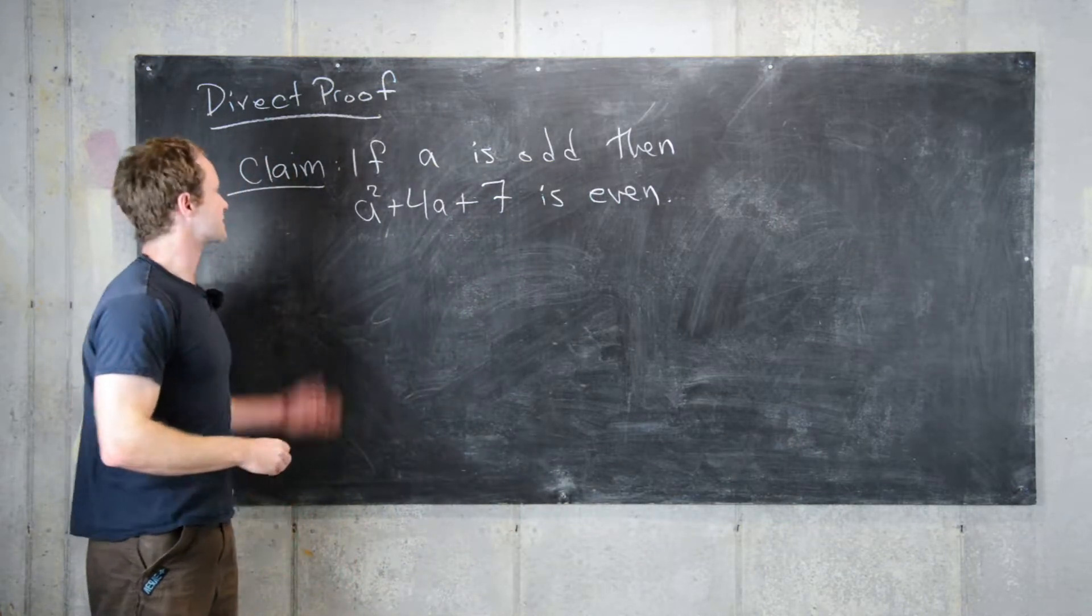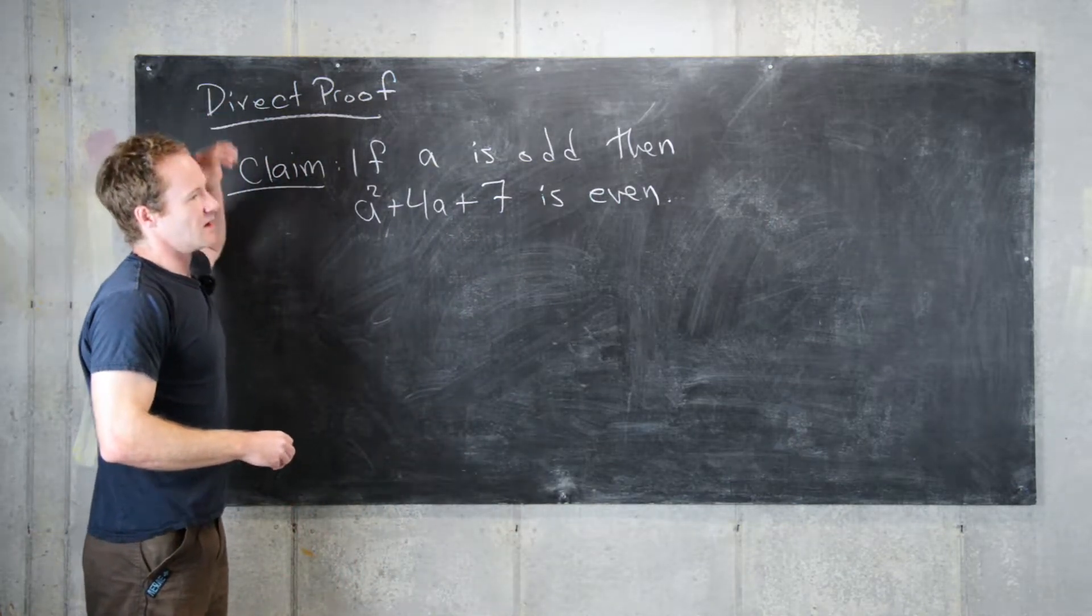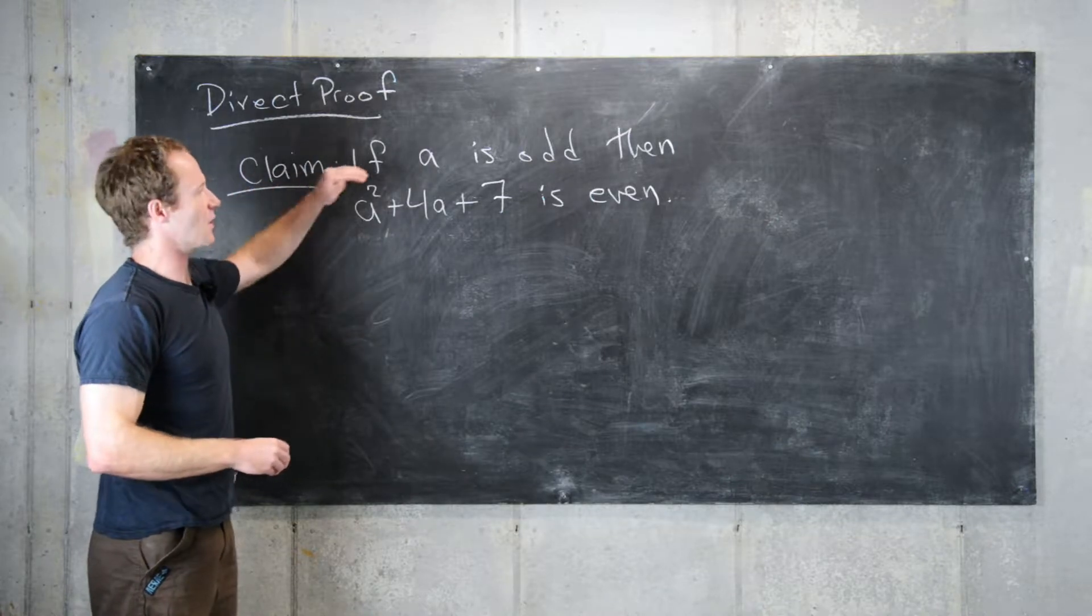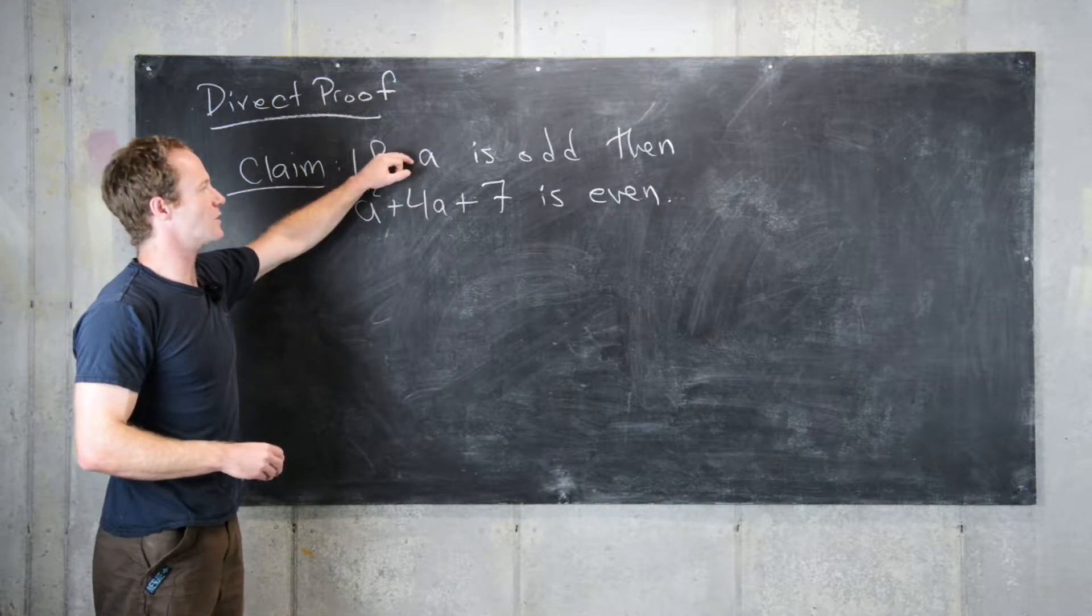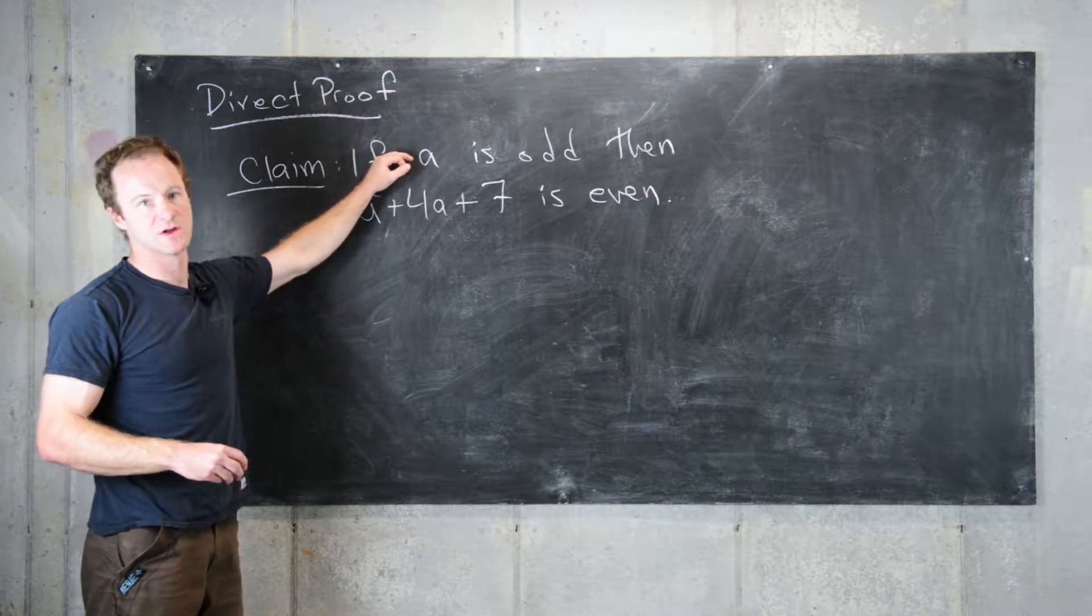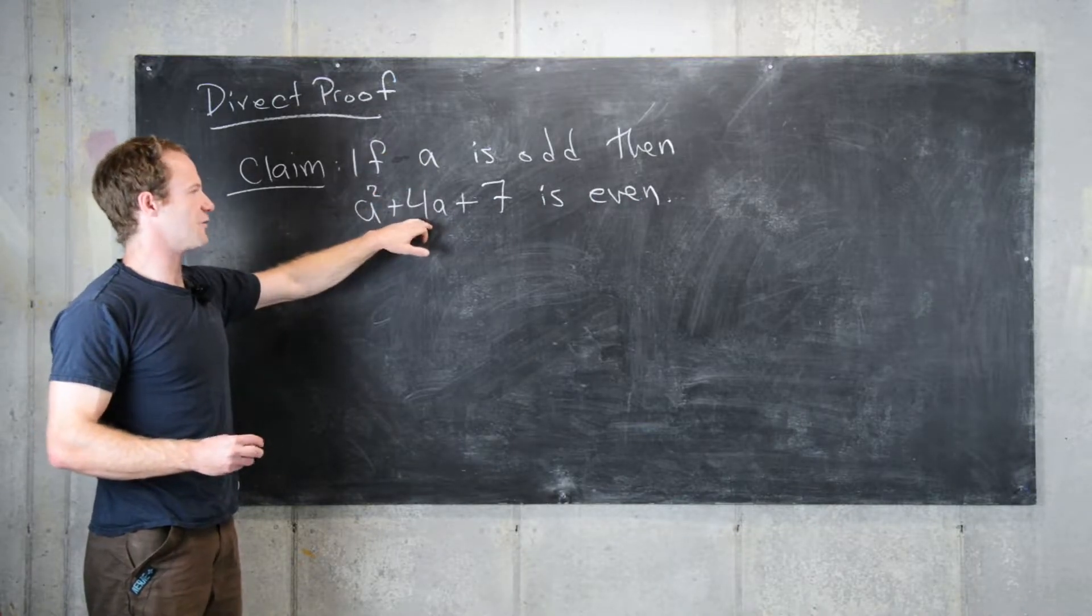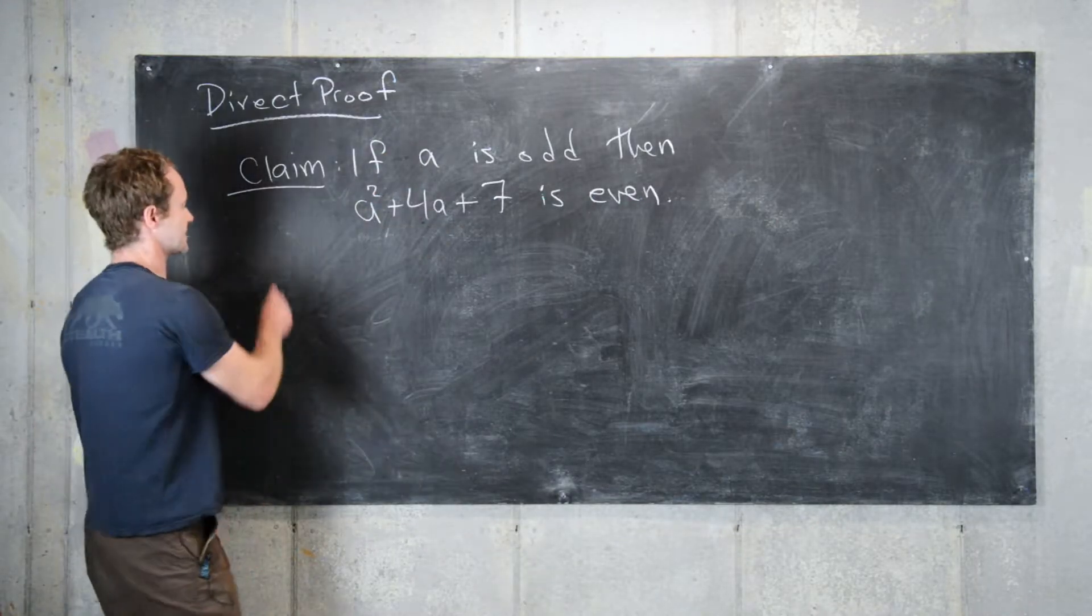Since we want to use the method of direct proof, there are no tricks in the proof at all. We just start supposing the hypothesis of the proof, do some calculations, and end up with the conclusion of the proof.